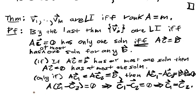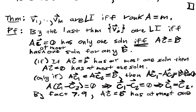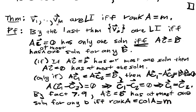So now we step back out. And by Fact 7.9 in your book, AC equals B has at most one solution for any B if and only if the rank of A is equal to the columns of A, but the number of columns of A is M. So I've shown that if we trace back through all the equivalences, I've shown that this equivalence holds.